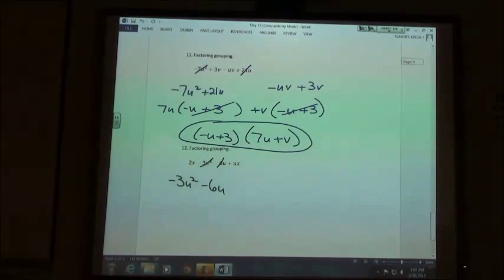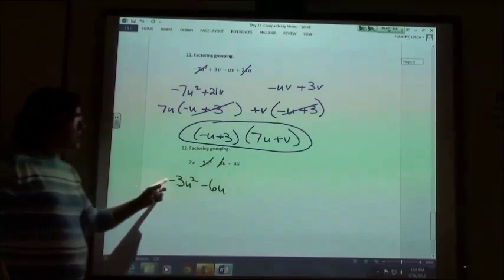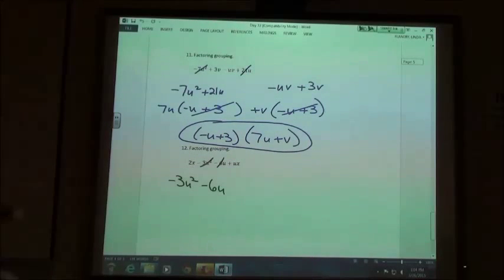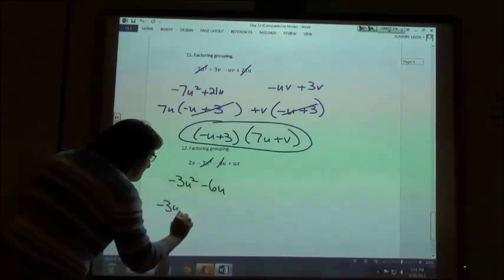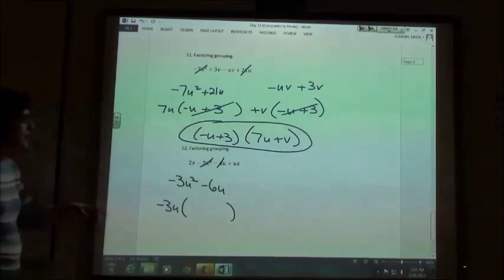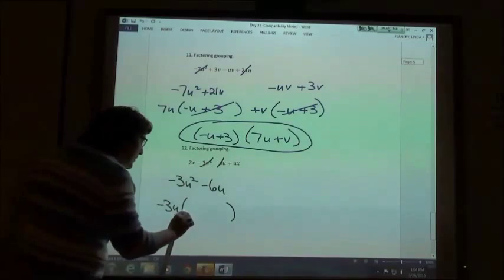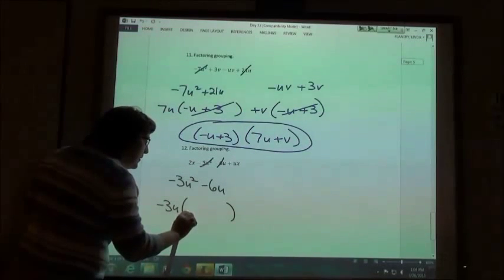Negative 3u squared and negative 6u. I don't know if it's going to be a negative or a positive. Since both of these are negative, it's best to do the negative. Perfect. So negative 3u. So if I take negative 3u squared divided by negative 3u, I'm going to get u.